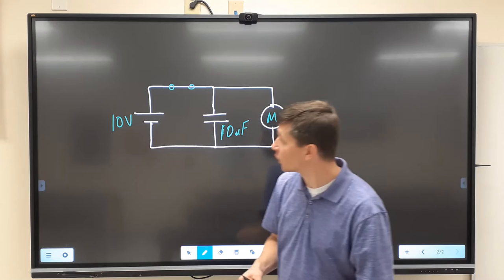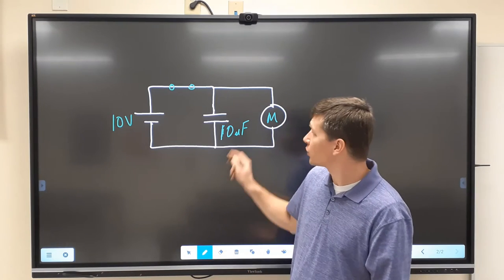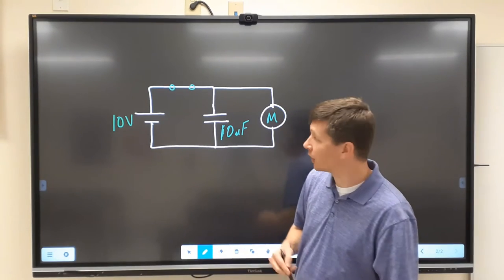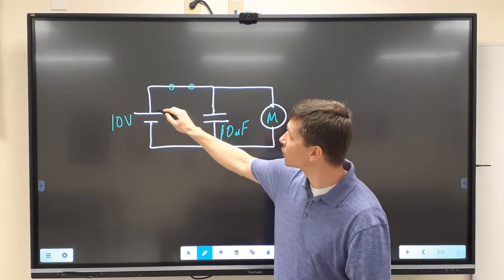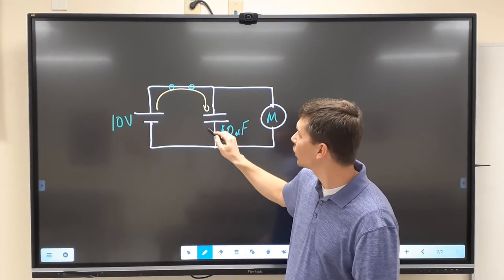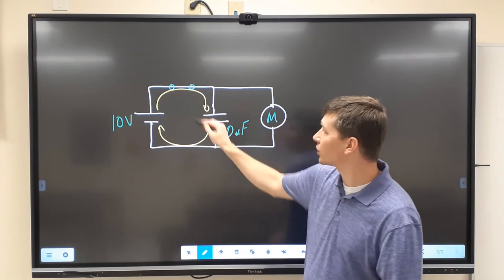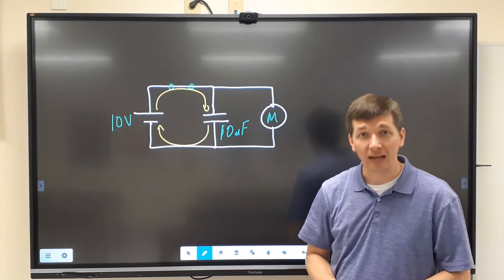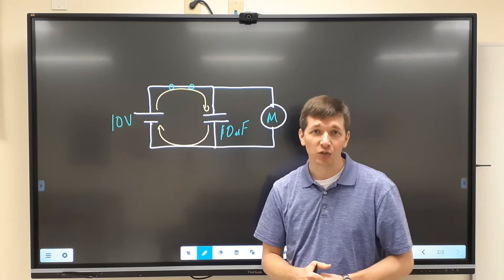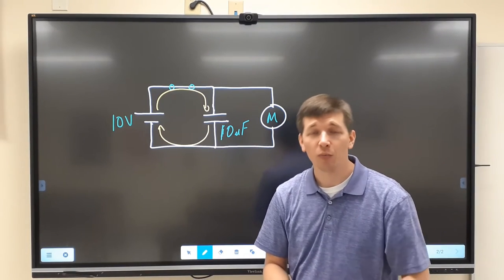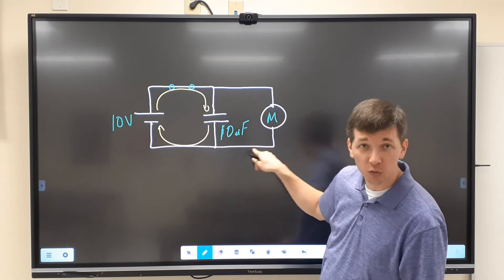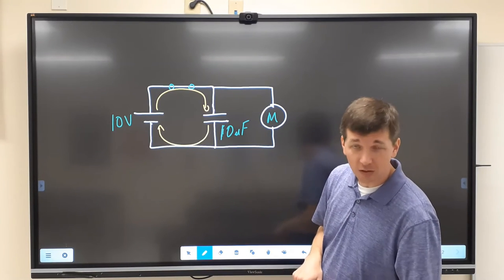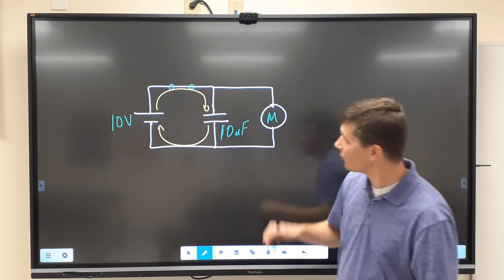All right, so what happens here first is we need to charge this capacitor up. So when we turn on our power supply and the switch is closed, the current can flow through this circuit that's going to charge our capacitor. Once that capacitor is fully charged, no more current is going to flow in this circuit. Very little current would flow through this multimeter over here ideally.